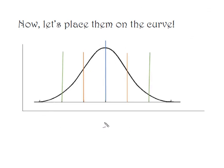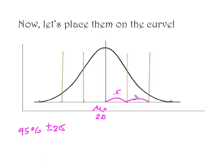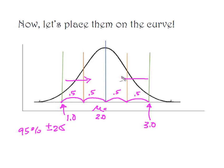Now let's look at the 95% interval. Beginning at my mean of 2.0, the empirical rule says we go plus or minus two standard deviations. Moving one, two standard deviations to the right — each standard deviation is 0.5 — I end up at 3.0. Moving one, two standard deviations to the left gets me down to 1.0. So 95% of the time a hummingbird will consume between 1 and 3 ounces of nectar.